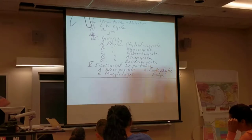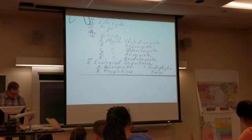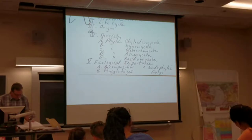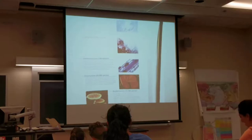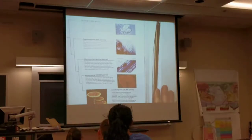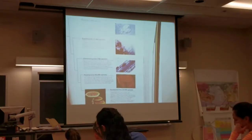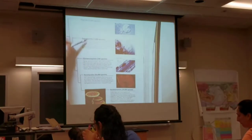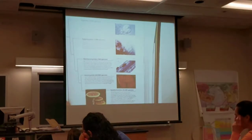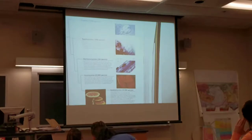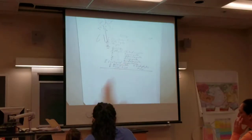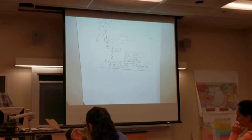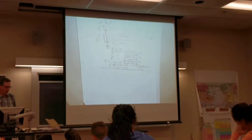Most of our time today will be spent on the diversity of fungi. Page 655 introduces the realm of fungal diversity — and you can breathe a sigh of relief: it's not as complicated as the protista we learned about. It's only five groups. Here's their phylogeny, showing the oldest group, the chytrids, and more recently evolved ones with their species counts. The first group is the Chytridiomycota, sometimes just called the chytrids.